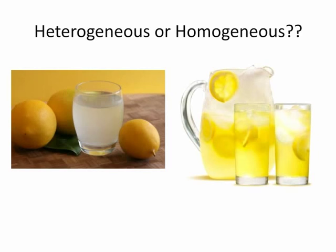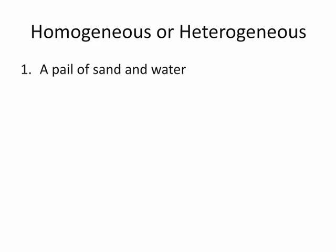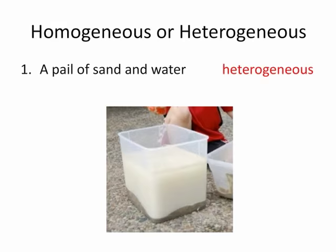I think that we are ready to practice using these terms. Homogeneous or heterogeneous? A pail of sand and water. Heterogeneous — because the mixture is not uniform. When the sand settles to the bottom, the mixture has more sand on the bottom of the pail than at the top. It is not uniform; it is heterogeneous.